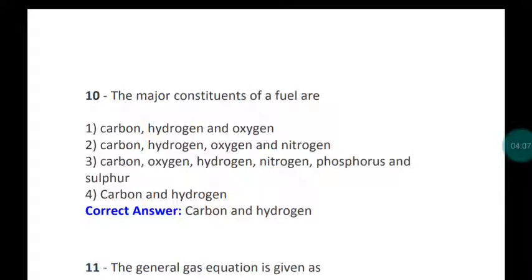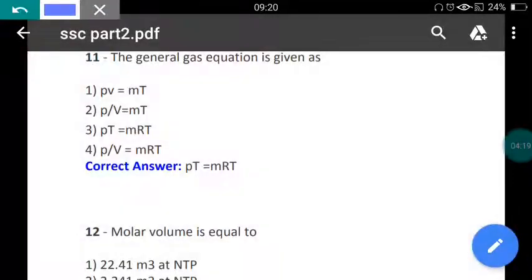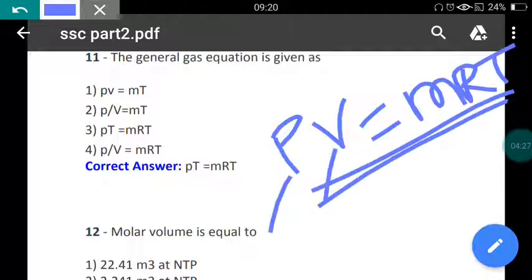Question number eleven: The general gas equation is given as PV equal to mRT. P is the pressure, V is volume, m is mass, R is the gas constant, and T is the temperature. PV is equal to mRT, this is the general gas equation.